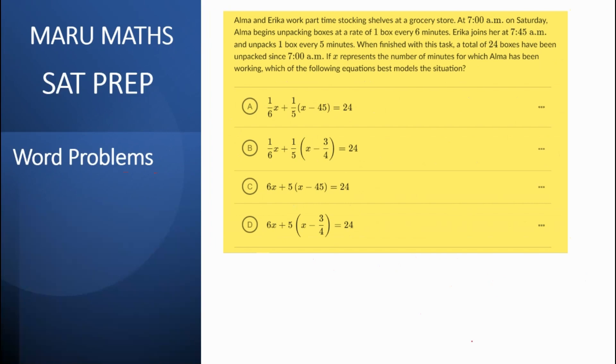The next question is Alma and Erica work part time stocking shelves. So at 7am on Saturday, they begin unpacking. So Alma takes one box for every six minutes. So the rate at which she's unpacking is going to be 1/6 the number of minutes. And Erica is doing that same thing one box every five minutes. So her rate is going to be one by five. So these are the two things that you should be looking at in your equations.